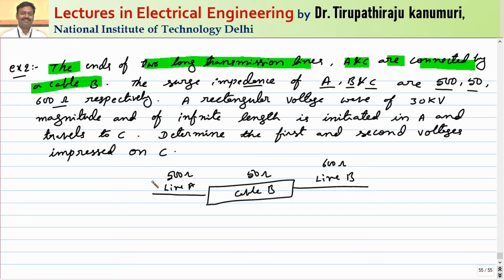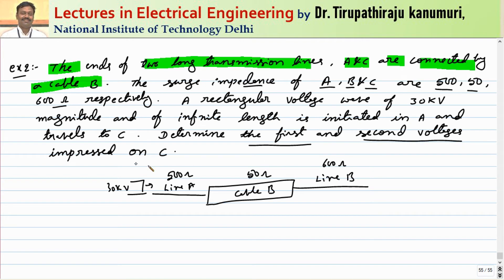A rectangular voltage wave of 30 kV of infinite length is superimposed on transmission line A and travels toward C. We need to determine the first and second voltages impressed on C.